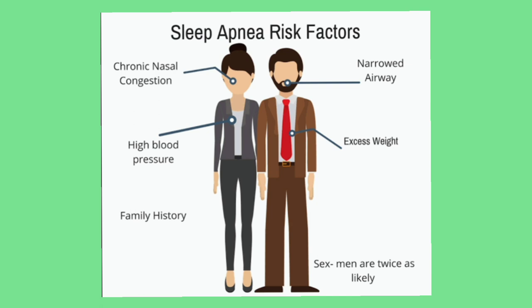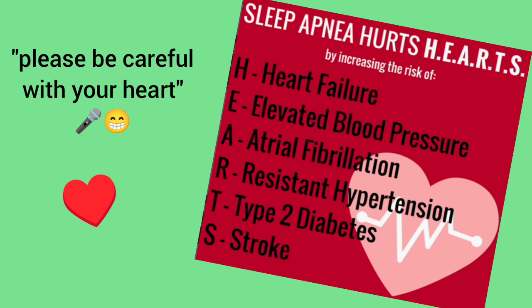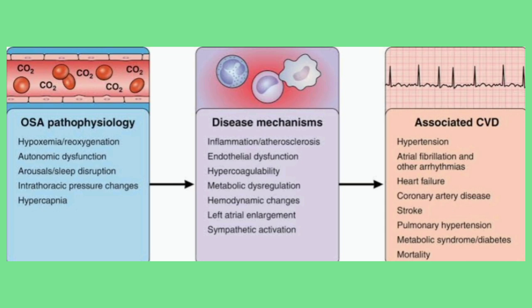Obstructive sleep apnea can affect all ages, but it occurs more frequently as you grow older and gain weight. The worse or more severe stage of OSA you have, the higher the risk of coronary artery disease, heart attack, heart failure, stroke, and irregular heart rhythm. If you have obstructive sleep apnea at a worse or severe stage, you are putting yourself at higher risk of developing heart-related or cardiac-related diseases.